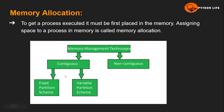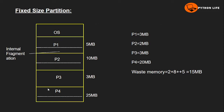Contiguous memory allocation has two types: fixed size partition and variable size partition. In fixed size partition, the main memory is divided into a fixed number of partitions. The main memory has an operating system part and a user part. For example: first partition 5MB, second partition 10MB, third partition 3MB.